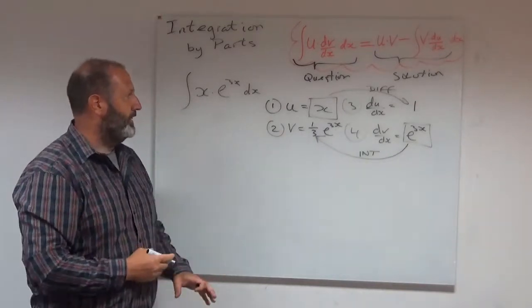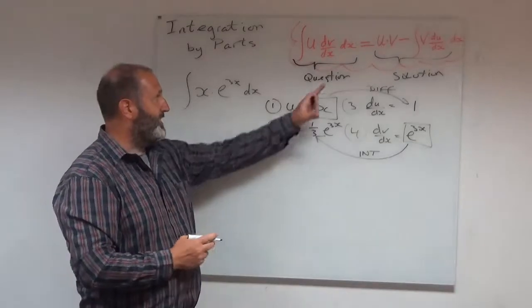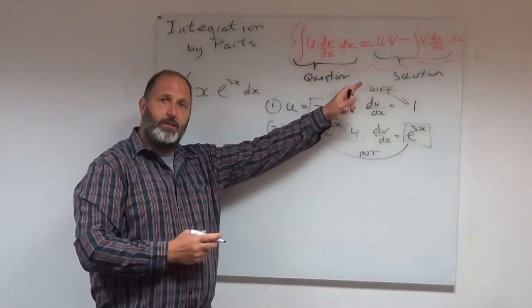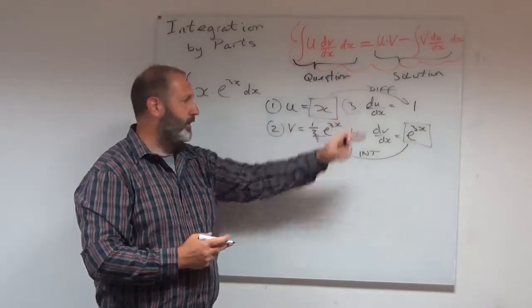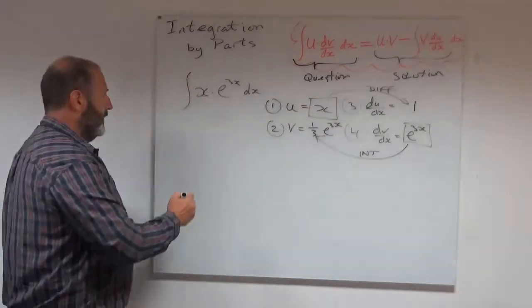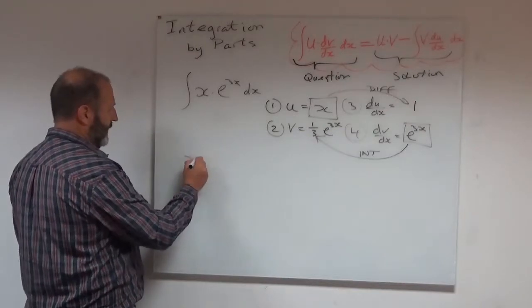Most of the mistakes that I see in students' work is at this stage. So now I've got to tap it into the formula, but the right-hand side of the formula. So my solution starts off with u, v. There's u, there's v. So my solution is going to look something like this.